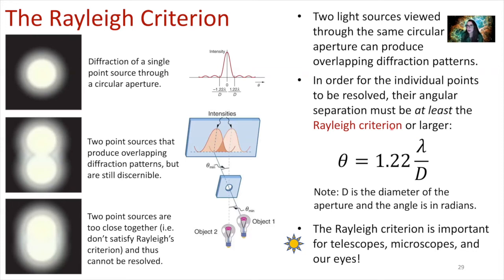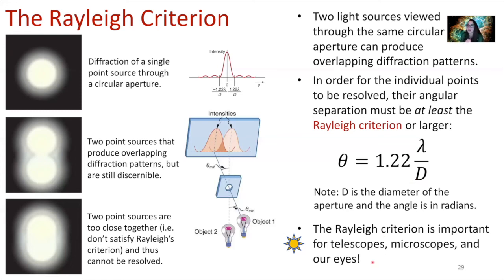In order for two individual points to be resolved — for us to tell them apart — their angular separation must be at least the Rayleigh criterion or larger. That was our equation for the angular separation between our central bright point and our first dark fringe in the circular aperture diffraction. In order to tell these distant objects apart, their angular separation in radians has to be equal to 1.22 times wavelength divided by D, where D is the diameter of the aperture. If you're thinking about your eyeball, D is the diameter of the pupil — that's the opening for light to come through. This is important for telescopes, microscopes, and our eyes.